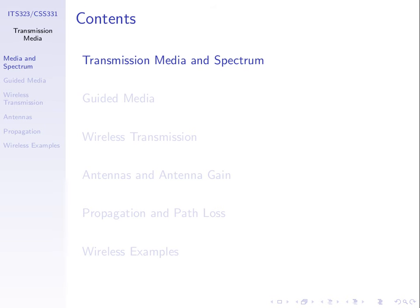We'll first introduce, for all the different media, the range of frequencies available. Every signal we transmit is not just one frequency but spans multiple frequencies — it has frequency components. The set of frequencies in a signal is called the spectrum, and the width of that spectrum is called the bandwidth. We can't use just any frequency; there's a limit. We'll look at what range of frequencies we have available, which we call the electromagnetic spectrum — all possible frequencies available to us.